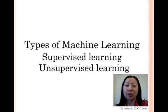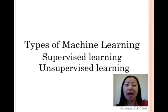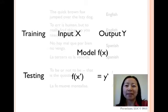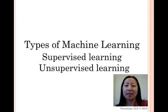There are two types of machine learning: supervised learning and unsupervised learning. Supervised learning is a machine learning task of inferring a function from labeled training data. The training data consists of a set of training examples, where each example is a pair consisting of an input object and a desired output value. The parallel task in human and animal psychology is often referred to as concept learning. A couple of examples of supervised learning algorithms are Bayesian networks and decision trees.